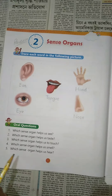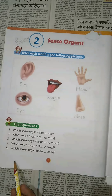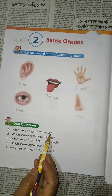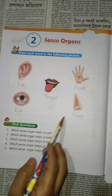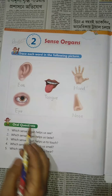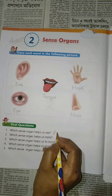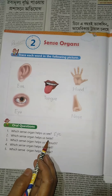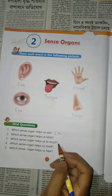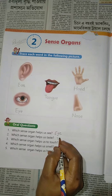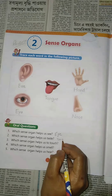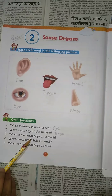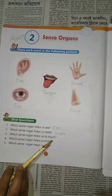Here are the oral questions. Which sense organ helps us to see? Everyone write down: E-Y-E — Eye. Which sense organ helps us to taste? This is called Tongue — T-O-N-G-U-E. Tongue helps us to taste.